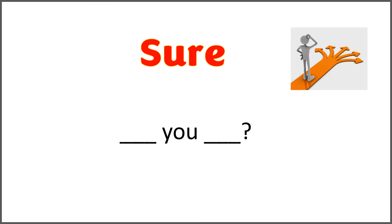The given word is 'sure' and the sentence is 'blank, you, blank.' Combine 'sure' with 'are' to make a sentence. Now it's time to check the answer.